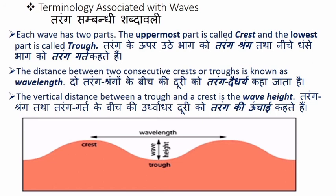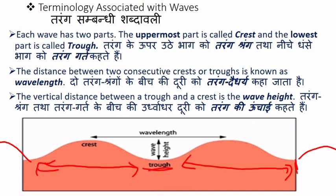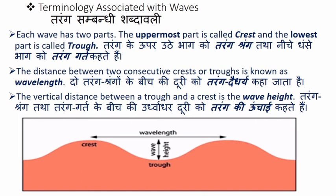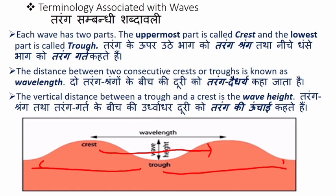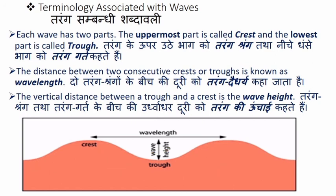The distance between two consecutive crests or two consecutive troughs is known as wavelength (तरंग दैर्ध्य). So from one crest to the next crest, or from one trough to the next trough — that horizontal distance is the wavelength. The vertical distance between a crest and a trough is the wave height.